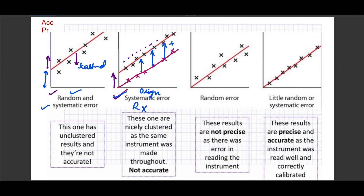On the other hand, a graph that starts from the origin but has scattered values has random error but no systematic error. In the last graph, which starts from the origin with points that are not scattered, there is little to no random error and little to no systematic error present.